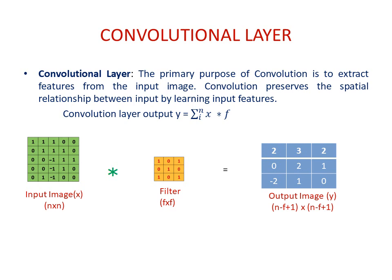For the sake of understanding this convolutional layer operation, I have chosen an n×n matrix as the input image — that is a 5×5 matrix — which is convolved with a 3×3 filter and produces a convolutional layer output of (n − f + 1) × (n − f + 1), which is a 3×3 matrix. This is the formula to calculate output image dimension, where n represents the size of the input image and f represents the size of the filter. You can change the size of the filter as per the requirement or problem description.